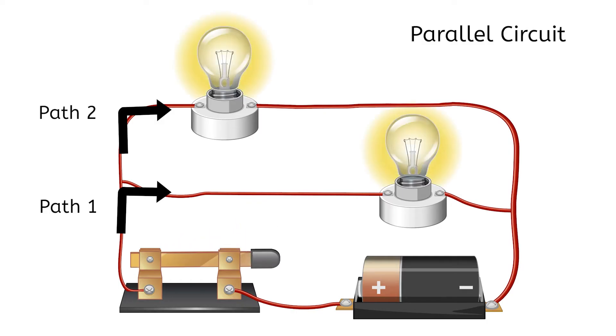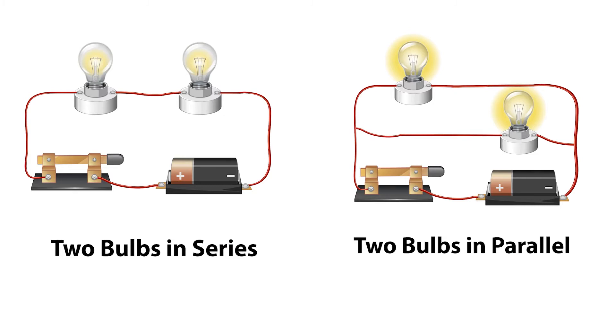And unlike the series circuit, they both light up with the same brightness as if there had only been one bulb. This is because in a parallel circuit, the voltage does not have to be shared, and each path gets the full voltage supplied by the source.